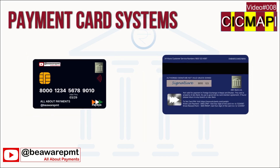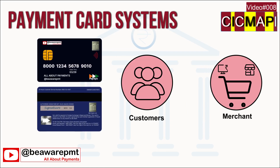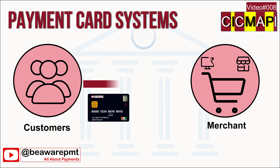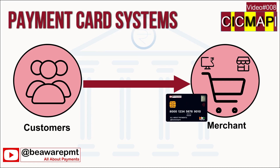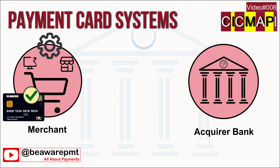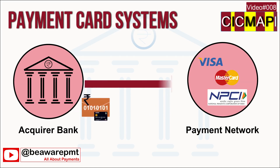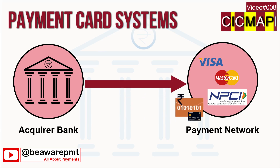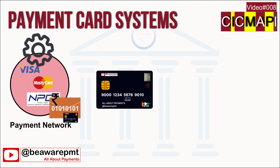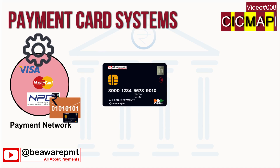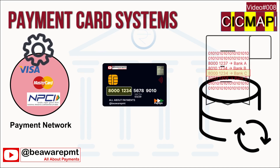Once the card is issued and activated, the cardholder can use it to purchase goods or services at a supporting merchant. The cardholder submits the card details and transaction amount on the merchant interface. The interface could be a POS terminal, website, or ATM. After successful validation at the merchant interface, the card and transaction details are passed to the acquiring bank, which sends them to the payment network. The payment network identifies the issuer bank based on the BIN number.